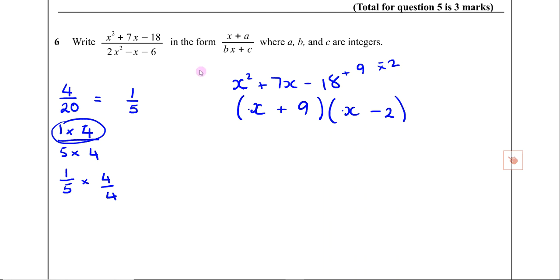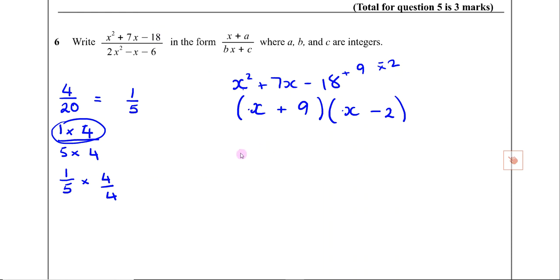Now we've got to do the denominator. So we look at this denominator: 2x squared subtract x subtract 6. Again, three terms — so it's a trinomial. There's no common factor in any of those, so I have to have two sets of brackets.